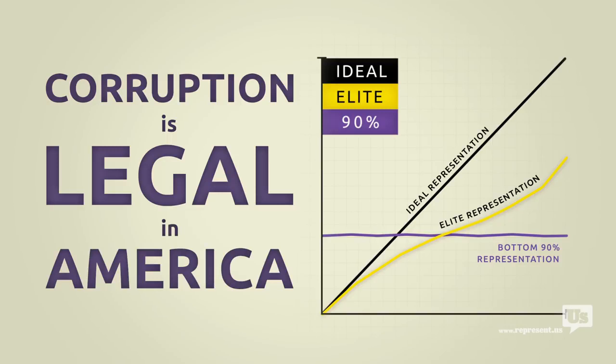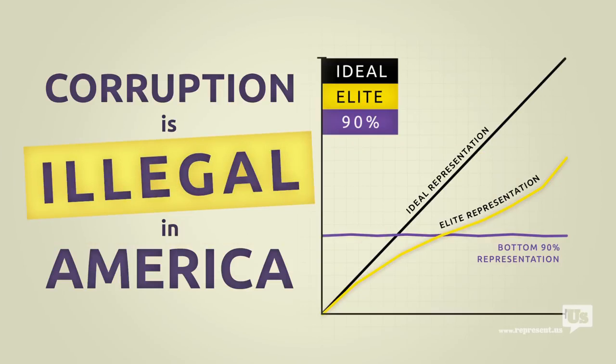And as long as it is, anyone who can spend money to buy political influence will. The solution here isn't rocket science. Make corruption illegal. We already know Congress won't do it.